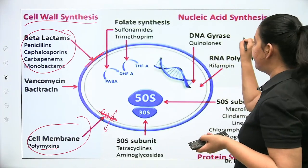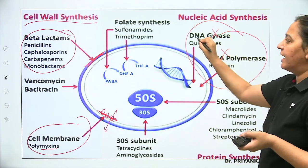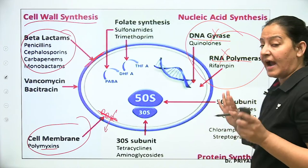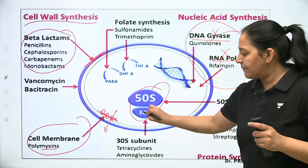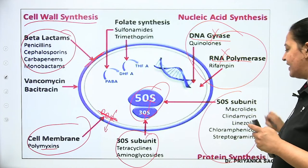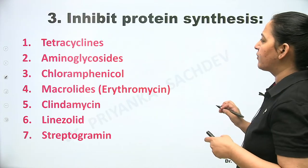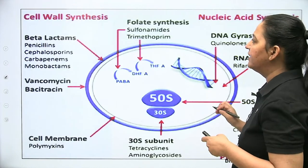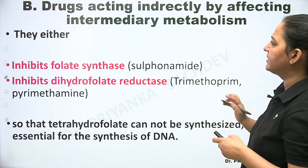You can read the detailed theory yourself. The important thing is to learn the examples of each category — which drugs belong to which mechanism. That is the classification of drugs based on mechanism of action: four categories. Now moving to the next classification — based on type of action — antibiotics are either bactericidal or bacteriostatic.